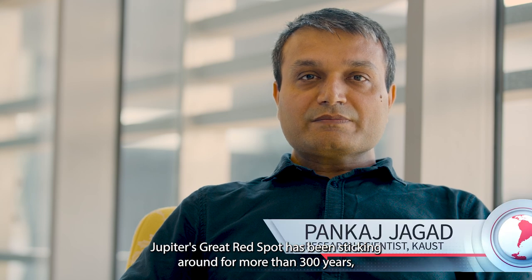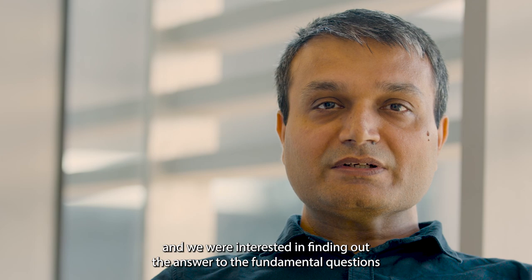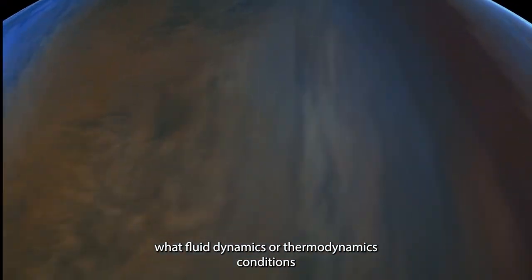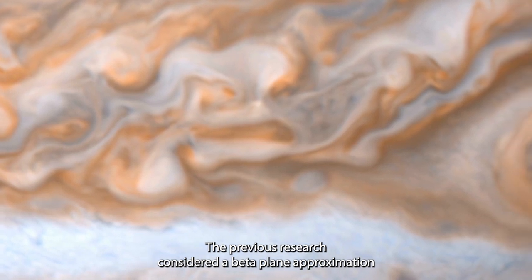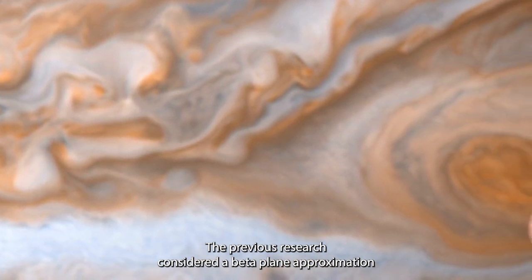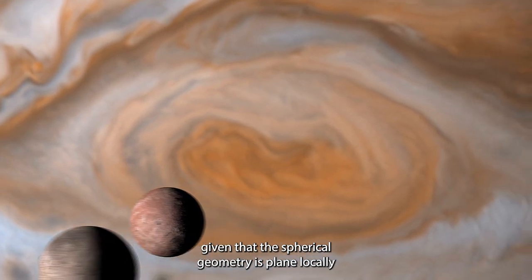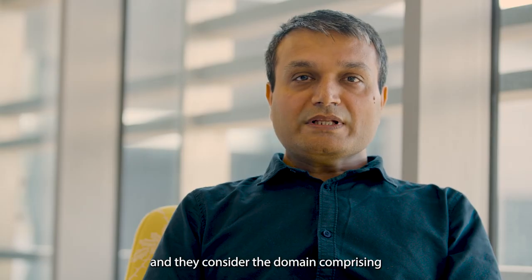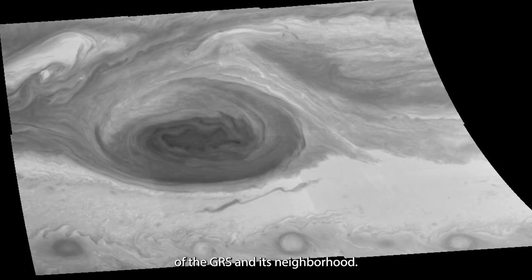Jupiter's Great Red Spot has been sticking around for more than 300 years, and we were interested in finding out the answer to the fundamental questions: what fluid dynamics or thermodynamics conditions might have formed it and made it so stable? The previous research considered a beta plane approximation, that is, the spherical geometry is a plane locally, and they consider the domain comprising of the GRS and its neighborhood, whereas we consider the full spherical geometry.